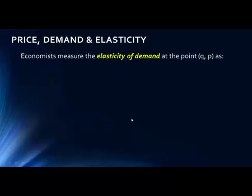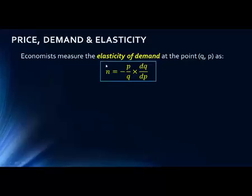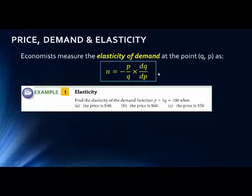Economists have created a formula that allows us to quantify how elastic the demand of a product is. This uses a Greek letter, lowercase eta (η), which stands for elasticity. The elasticity equals negative p over q, times the derivative of the quantity with respect to the price, dq/dp. We might also call this q prime from our prior notation. Let's look at a quick example to see how this works.